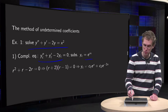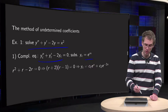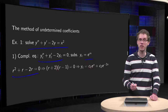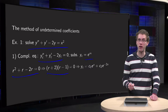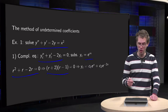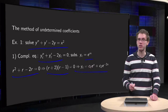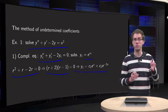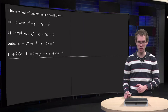We substitute y = e^(rx), plug it into the differential equation, and get the characteristic equation, which we can factorize. The solutions are r = -2 and r = 1, which means the complementary solution equals c₁e^x + c₂e^(-2x).